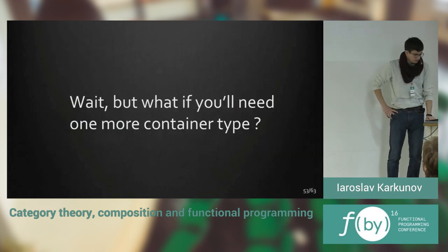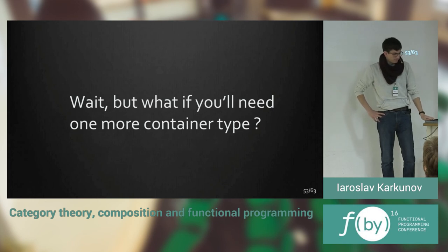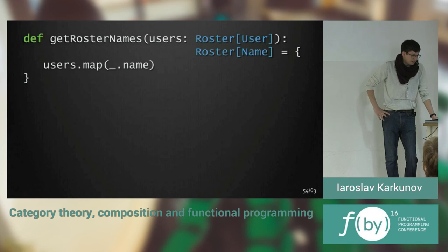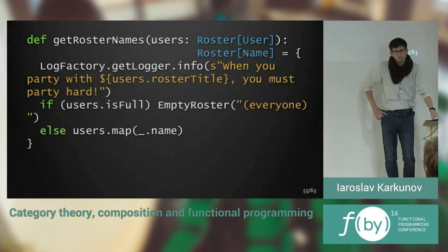Wait, but what if you need one more container type? You will need one more function, get roster names, for example. And there will be some container which I called roster. And it will do exactly the same, actually. But the code could grow bigger, more complex, and more scary.